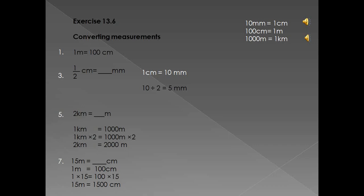Number three: half a centimeter equals how many millimeters? What you memorized is that one centimeter equals 10 millimeters. So what you do on one side of the equals sign, you have to do on the other side. We have one centimeter equals 10 millimeters, and now we have half a centimeter — that means we divided by two. So you divide the other side by two as well: 10 millimeters divided by two is five. The answer is five millimeters.